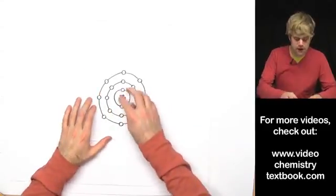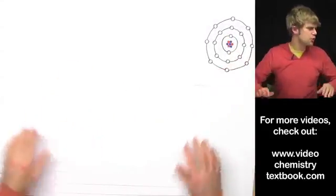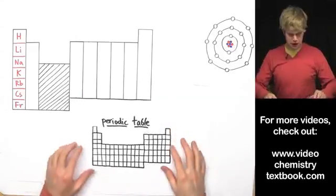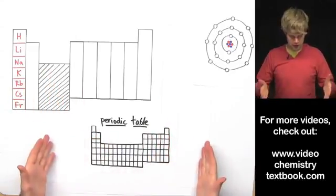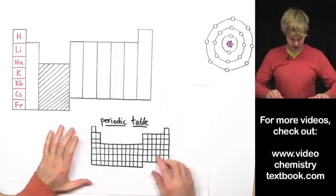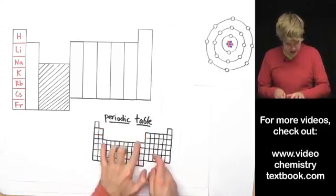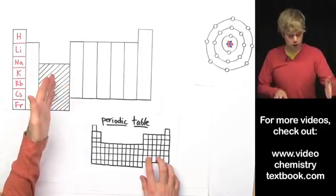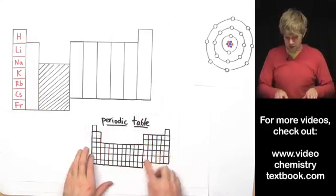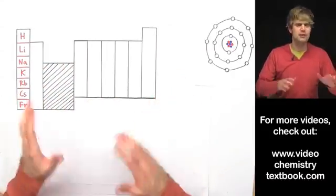Let's look at what happens when we start filling these electron parking spaces with actual electrons. We're going to use the periodic table for this, going column by column. I've made a big version of the periodic table that looks a little different — we're leaving out the elements in the middle section and only focusing on eight columns: these two on the left and these six on the right.